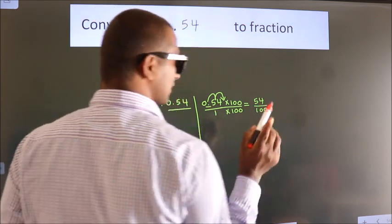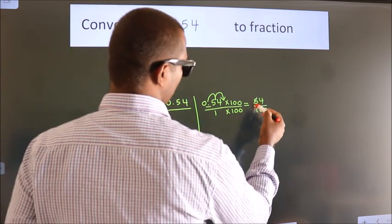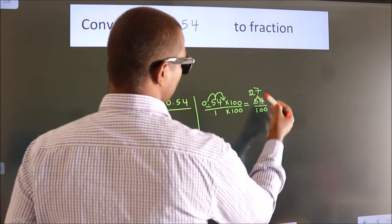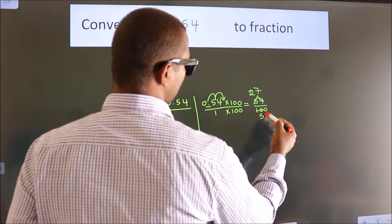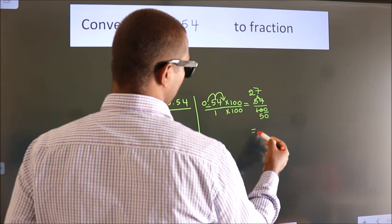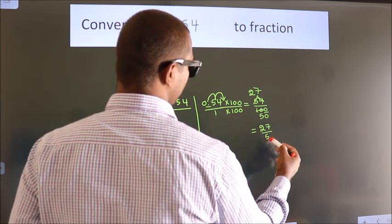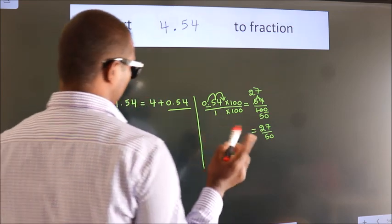Now cancel with 2. 2 twos, 2 sevens, 2 fives. This 0 as it is down. So the fraction we got is 27 by 50.